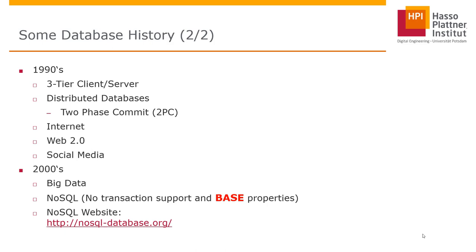Internet came up with Web 2.0, social media, and so on. And ten years later, in the 2000s, we have big data as an extension — another possibility to deal with data, especially with really large amounts of data. But big data means not just big data, not just big volumes — there are other important characteristics, and we'll get back to that later in a video clip.